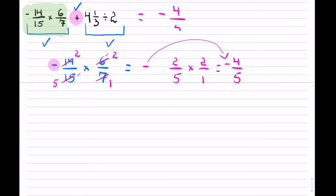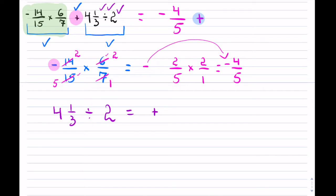I now have negative 4 over 5 plus the second term. I have 4 and 1 over 3 divided by 2. There are no negatives, so I know my answer is positive. What I like to do is always change any mixed numbers or whole numbers to improper fractions. Changing this one back: 3 times 4 plus 1 is 13 over 3.